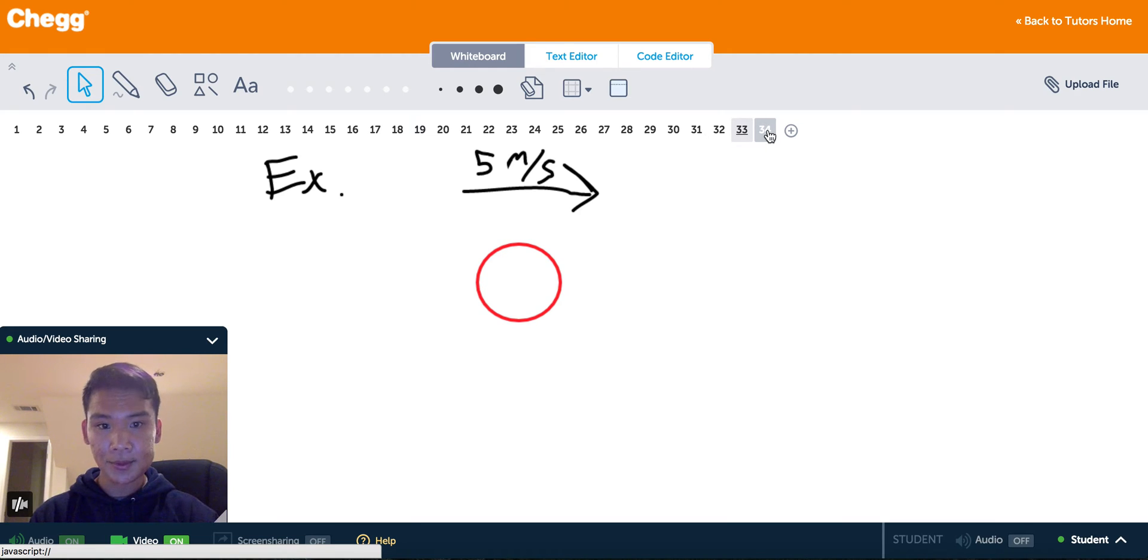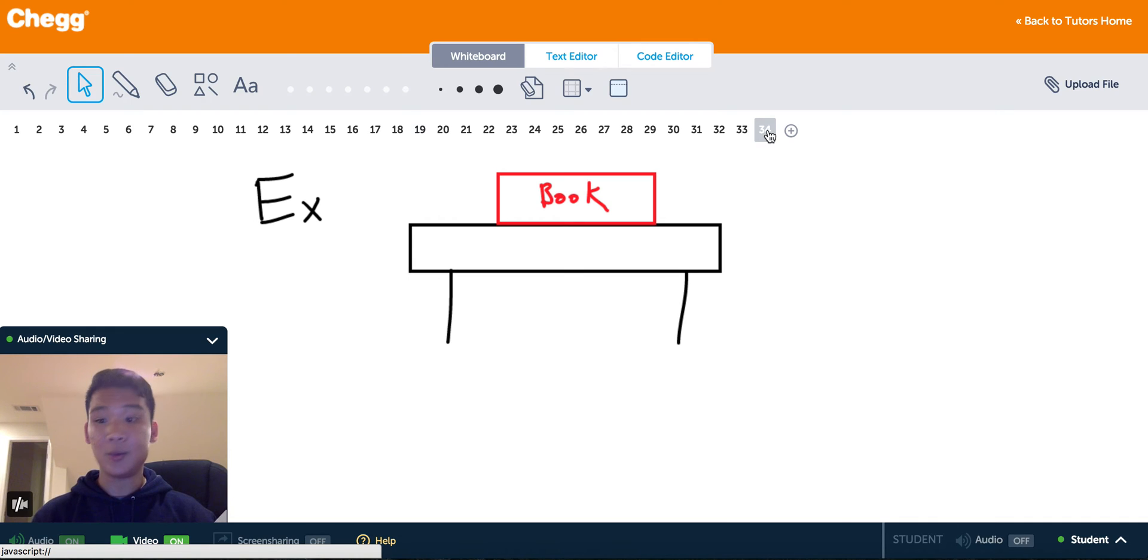Next example. Let's say we are on Earth now, and we have an example where a book is on a table. So the book is at rest, it's not moving at any velocity, it's just at rest on a table. Now, this is where the unbalanced force kind of comes in.